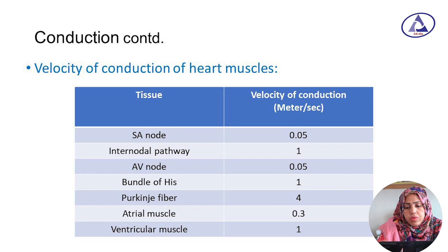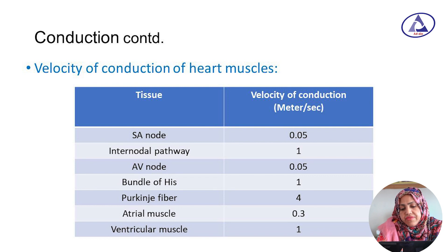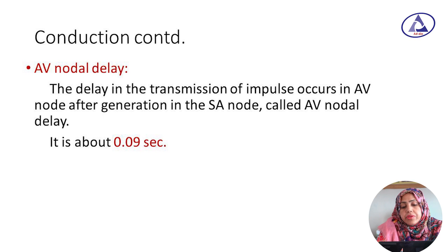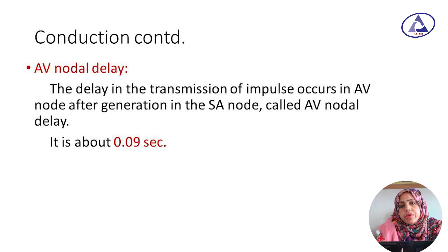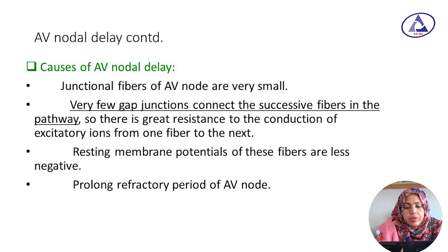Regarding conduction velocity of the heart muscle: the SA node is 0.5 m/s and Purkinje fibers are 4 m/s — this is the highest conduction velocity. What is the AV nodal delay? The delay in impulse transmission from the SA node to the AV node is called the AV nodal delay. It is about 0.09 seconds.